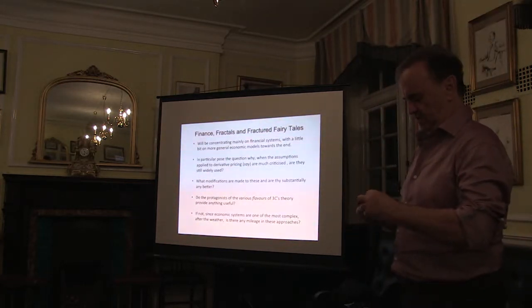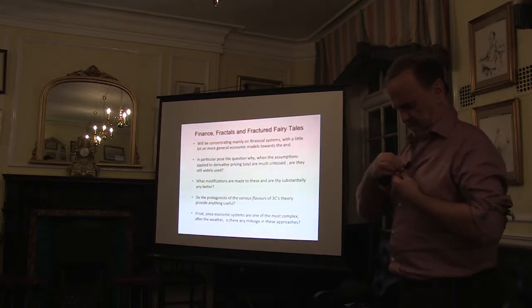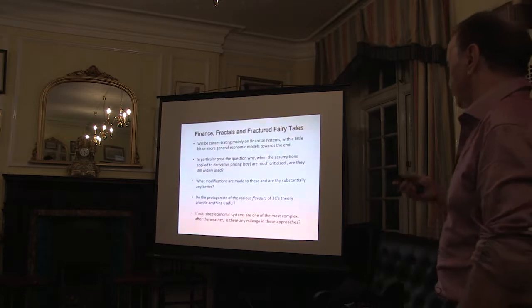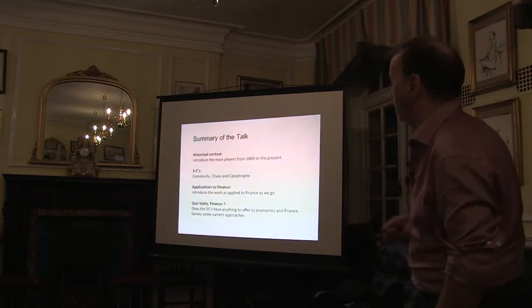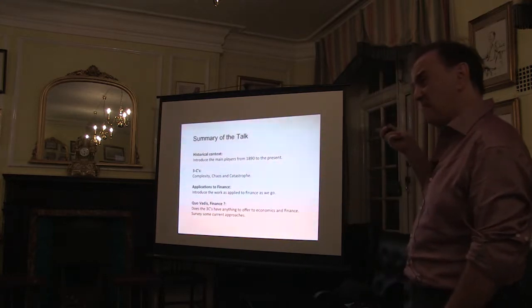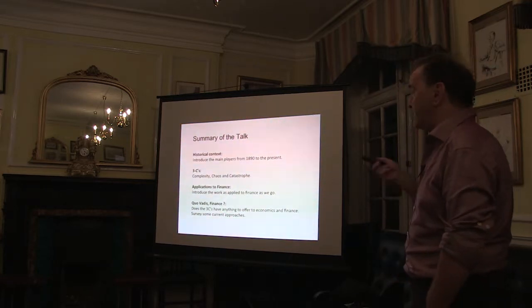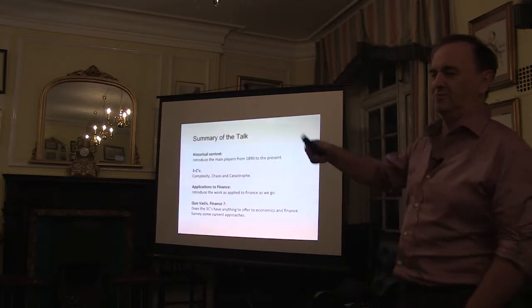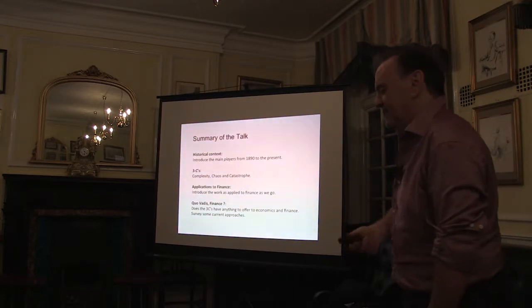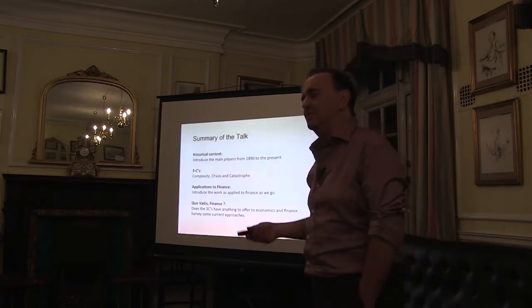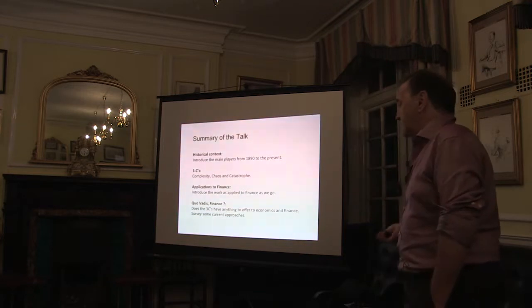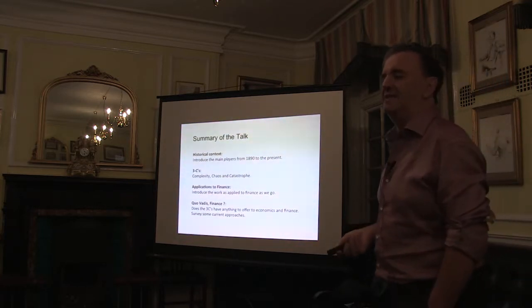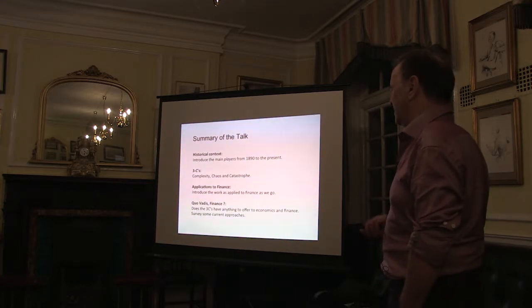If there's no hope for using modern dynamic systems theory in economics, is there any hope that you can use it at all? Those are the kind of things I want to talk about. I'm going to talk about the main players, going back to 1890. The three C's are complexity, chaos, and catastrophe theory — chaos is where the fractals come in. I'll also talk about where they've been applied and the work done in finance, and at the end, if we've got time, whether there is anything to offer in finance and economics.